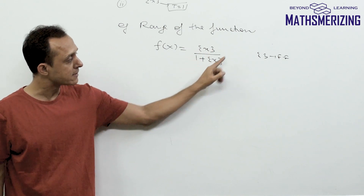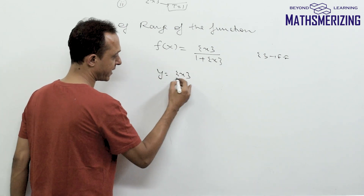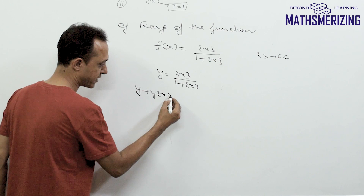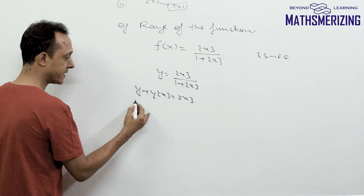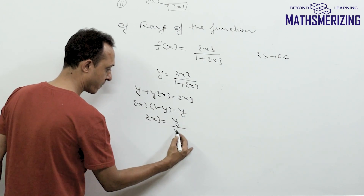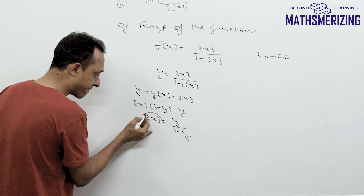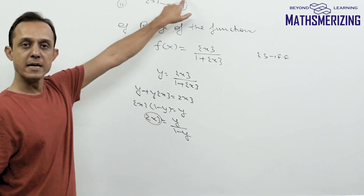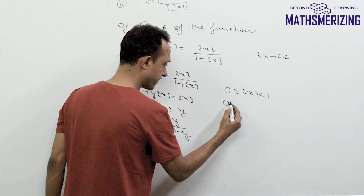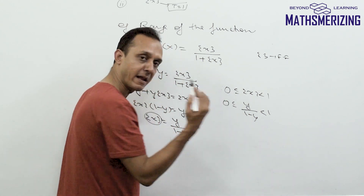Another question: find the range of f(x) = {x} / (1 + {x}). Let y = {x} / (1 + {x}). Cross-multiplying: y(1 + {x}) = {x}, so y + y·{x} = {x}, giving {x}(1 − y) = y, thus {x} = y/(1 − y). To find the range of y, I use the restriction that 0 ≤ {x} < 1, so 0 ≤ y/(1 − y) < 1.